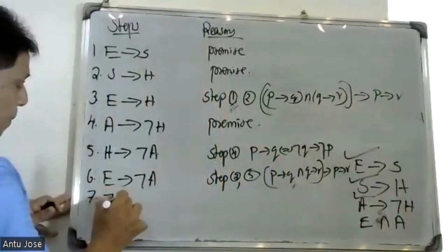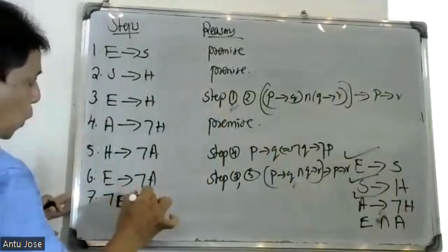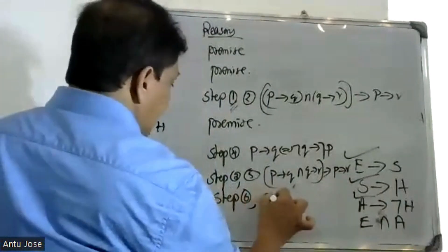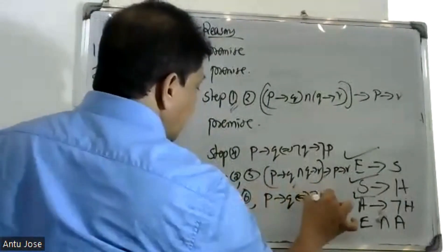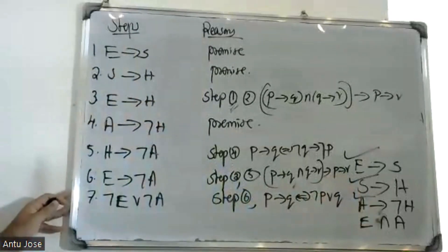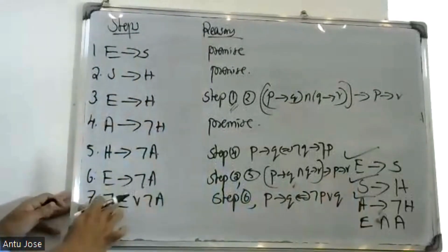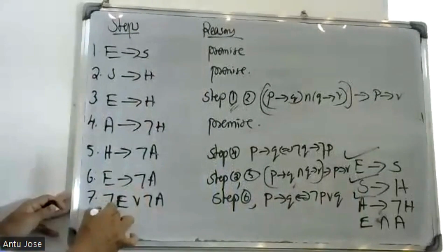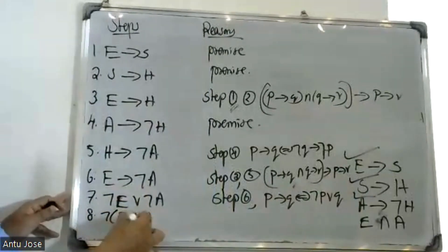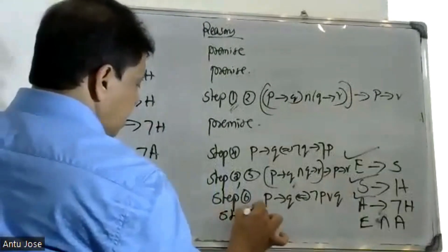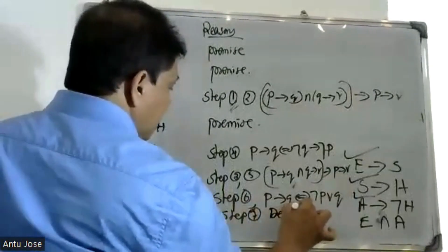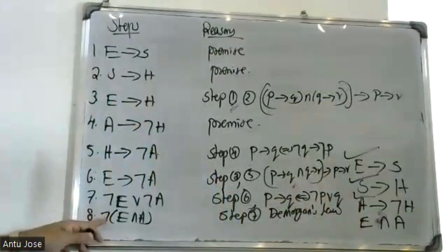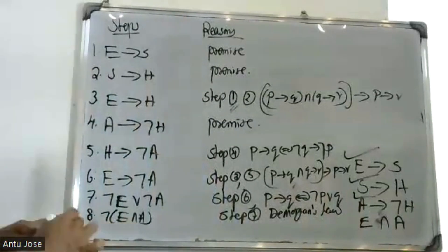Negation E or negation step. Since formula p conditional q is equal to negation p or q, in the regular formula p conditional q equals negation p or q. Applying De Morgan's law: negation of E and the result gives negation E.